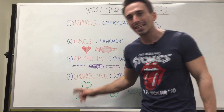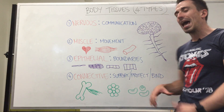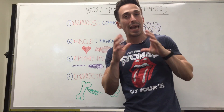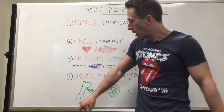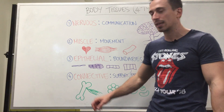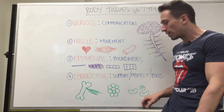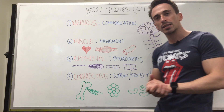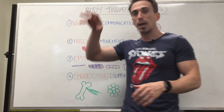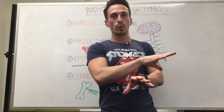The last tissue type is connective tissue, which supports, protects, and binds. There are many different types — bone is connective tissue, tendons are connective tissue, fat cells are connective tissue, and even blood is connective tissue. So connective tissue can be solid, semi-solid, or even liquid.